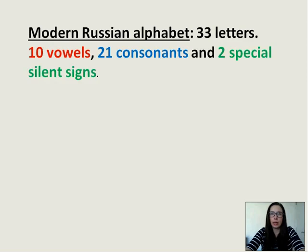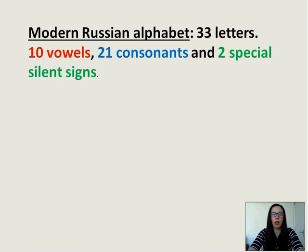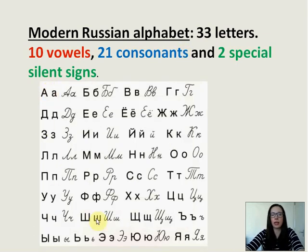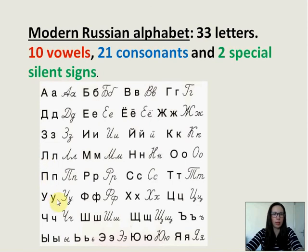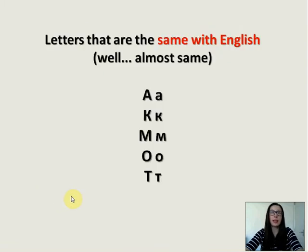The Russian alphabet consists of 33 letters: 10 vowels, 21 consonants, and 2 special silent signs. You can see a typing option and a cursive option, and you may notice that many of the letters look very similar to English. I divided all Russian letters into a few categories, and we will learn each category separately. We will start with the easiest category — letters that are the same as English, or almost the same.